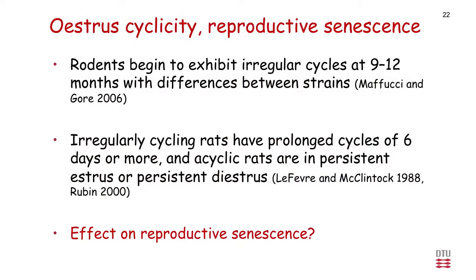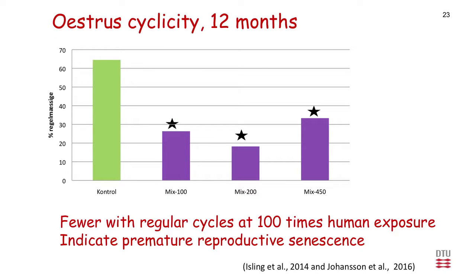Turning to the female offspring, we looked at estrous cyclicity both when they were young and when they got older. Rats start to have irregular cycles around 9 to 10 months of age, tending toward prolonged cycles of 6 days or more, or no cycle at all. We wanted to see if there could be an effect on reproductive senescence. We found fewer animals with regular cycles at 100, 200, and 450 times human exposure levels, indicating premature reproductive senescence in female offspring.